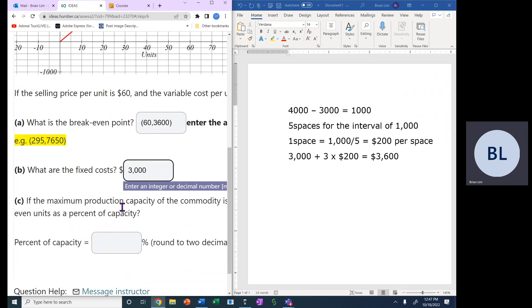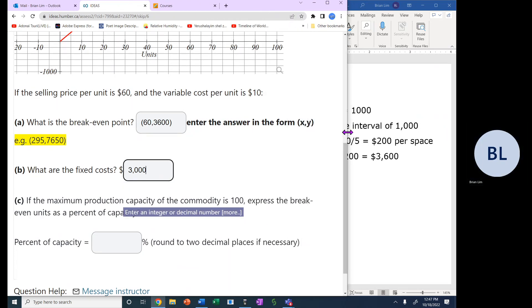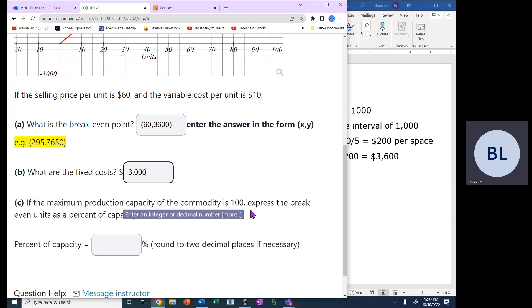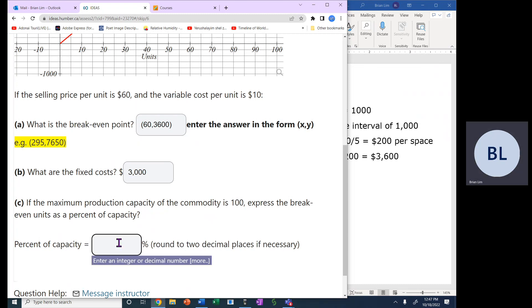Now, if the maximum production capacity of the commodity is 100, express the breakeven unit as a percent of capacity. Now, this one is quite simple because if this is 60, that is the breakeven point, and this is 100, then the answer should be 60%.